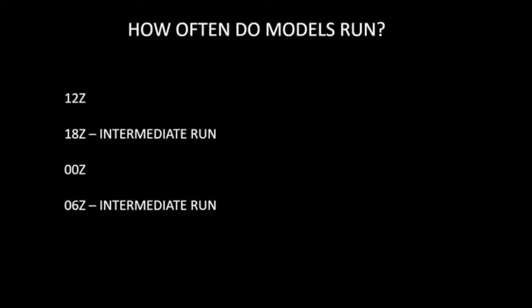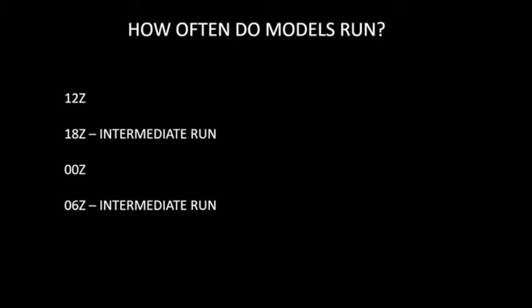These models run several times per day. You have the 12Z run, the 18Z — our midday run — the 0Z run, and the 6Z run. The 18Z and the 6Z are called intermediate runs. Sometimes those are not quite as accurate as your primary runs, like the 12Z and the 0Z. But essentially most of these models run four times per day. The HRRR is the model that actually runs every hour, and the RAP will do that as well.